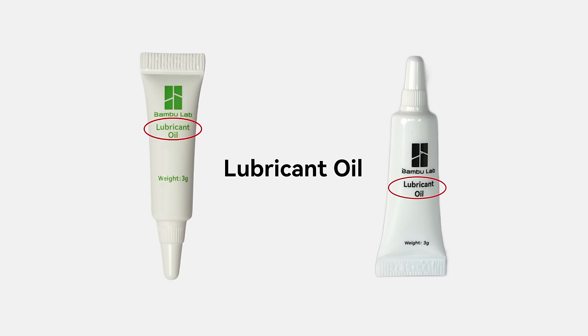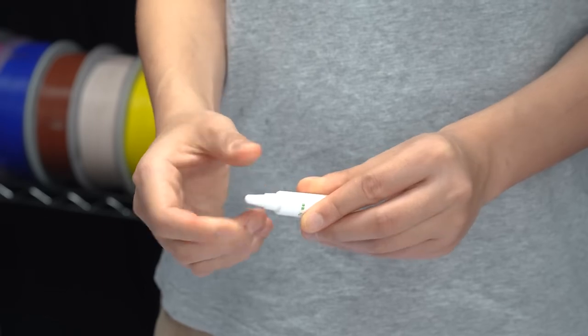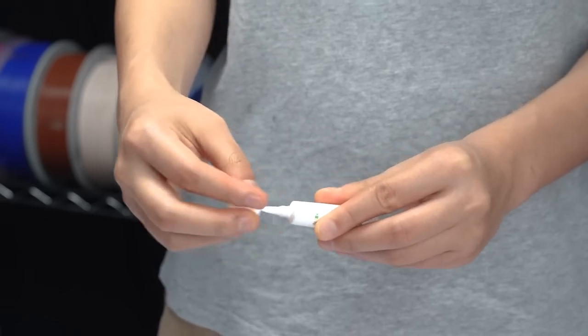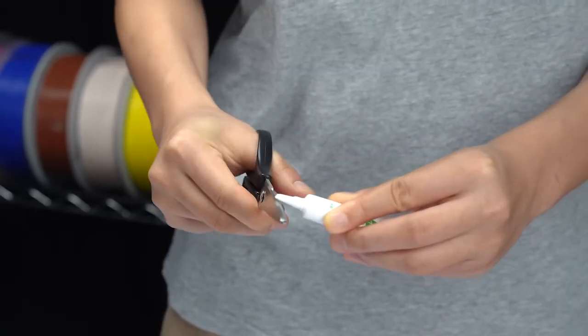Please use zinc lubricant oil from the accessory box and avoid lubricant grease. Rotate and unlock the lubricant oil cap, then create a small hole in the bottle nozzle.